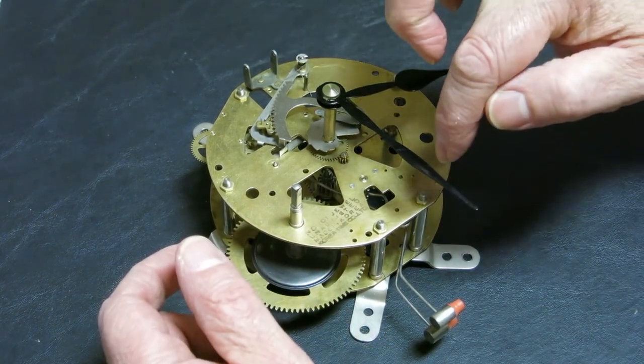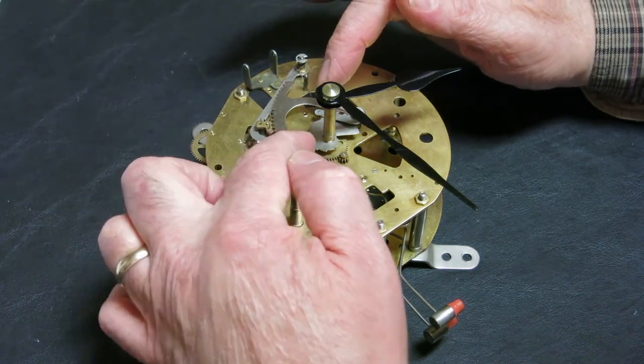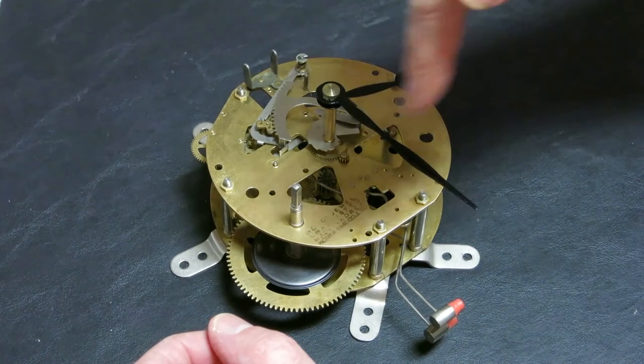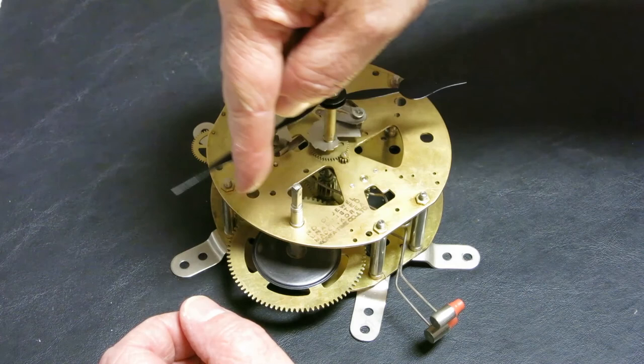Now the next time, this rack should drop as far as it can, which is constrained by this snail here, which rings different number of times for different hours. So the next time here should be 4 o'clock.